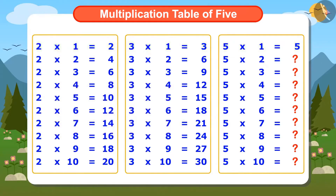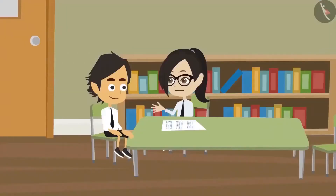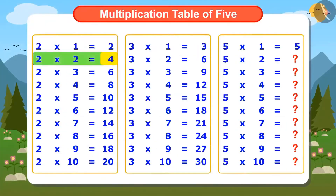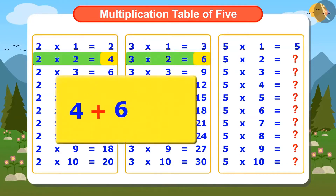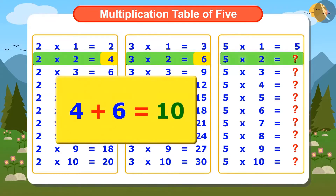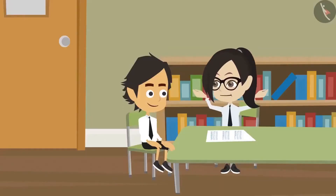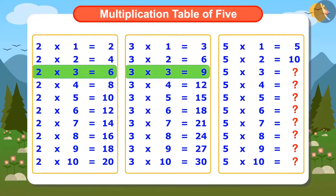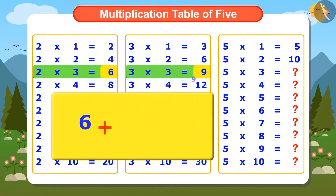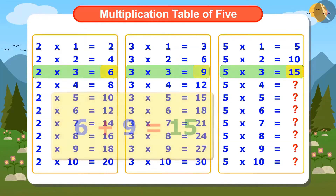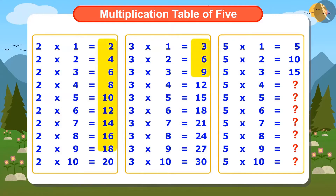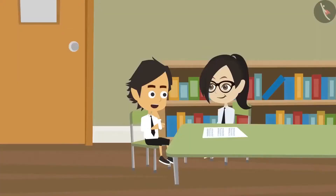I don't think we can find the next number similarly. We can find it exactly like this — 2 multiplied by 2 is 4, and 3 multiplied by 2 is 6. If 4 and 6 are added, the answer will be 10, which means 5 multiplied by 2 is 10. Then we can find the third number by adding 6 and 9, which will be 15. In this way we can find the complete multiplication table of 5 by adding numbers from the multiplication tables of 2 and 3.